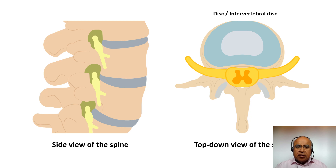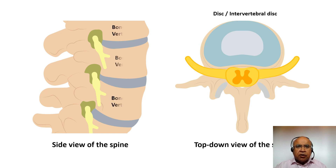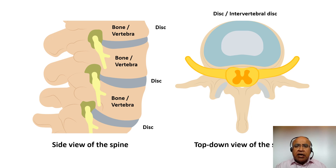There are two images: the image on the left is the side view of the spine, and the image on the right is the top-down or axial view of the spine. The vertebral column consists of blocks of bones placed one over the other — the individual bones are called vertebrae. In between the blocks of bones are soft cushions called intervertebral discs. The vertebrae and the discs are arranged alternately.